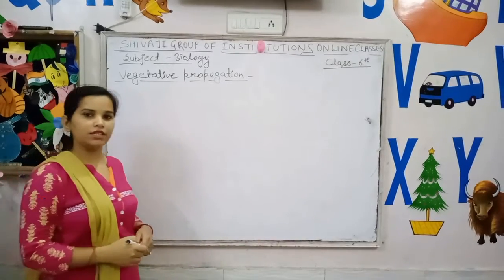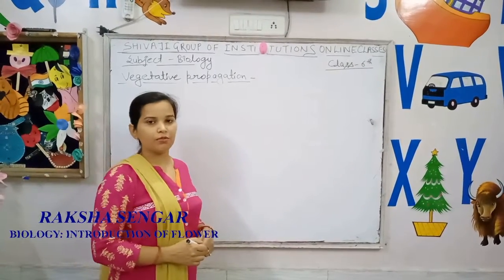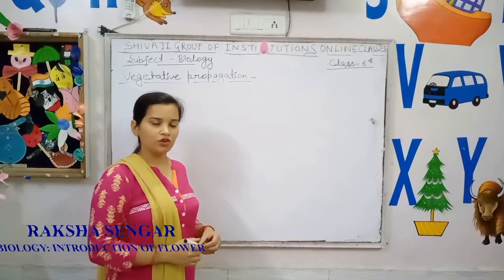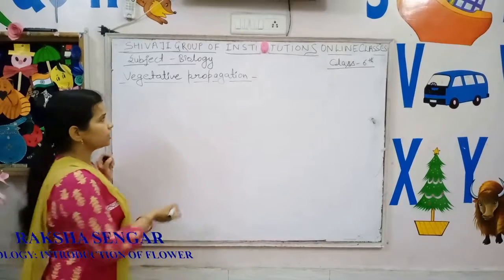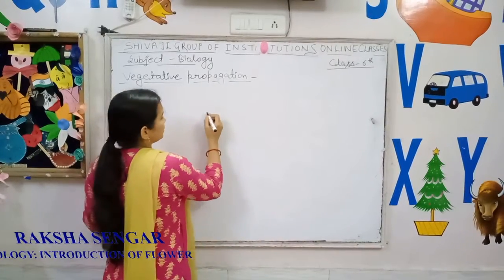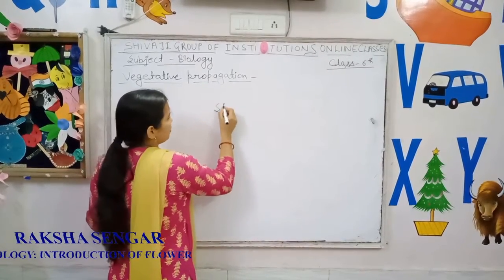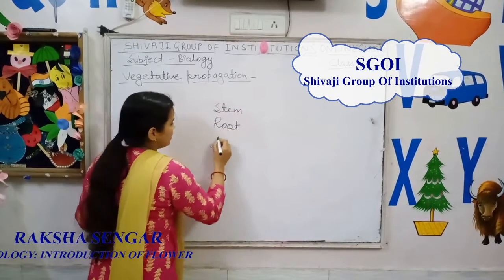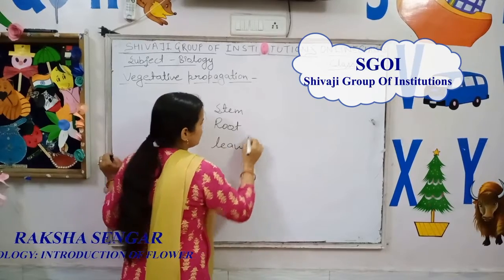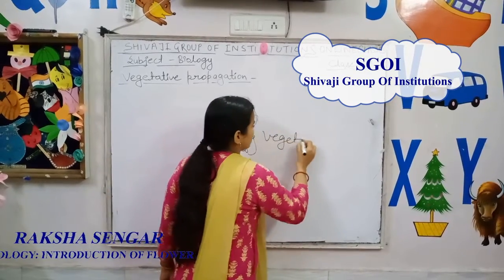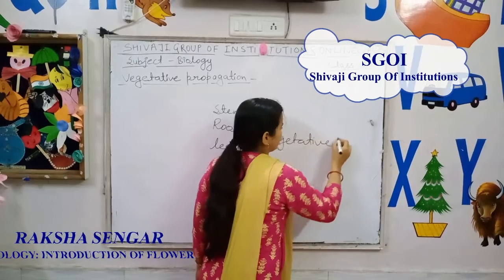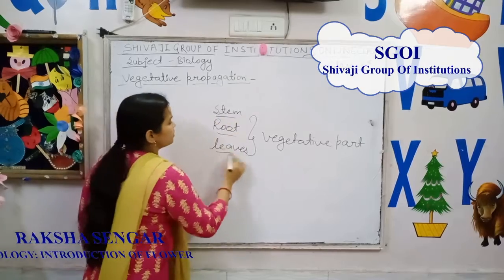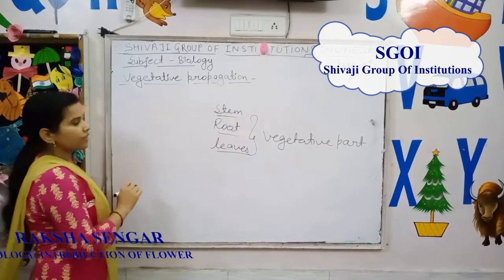What is vegetative propagation? Vegetative propagation is the multiplication of a plant by using the vegetative parts of a plant. The vegetative parts are the stem, root, and leaves. By using these parts, multiplication occurs in plants.